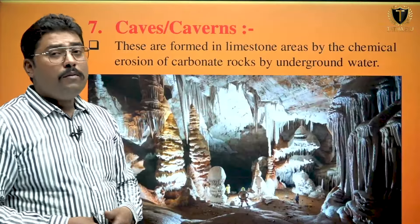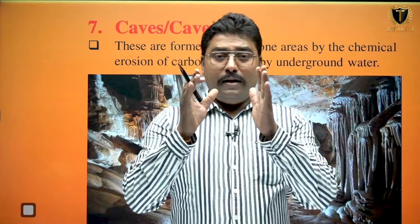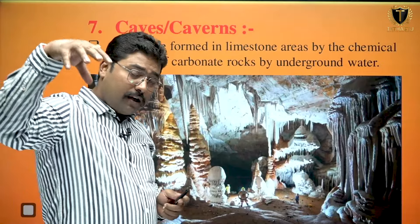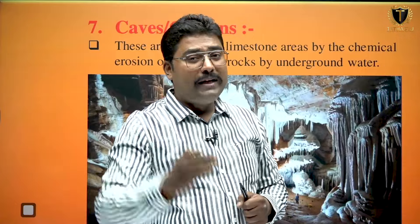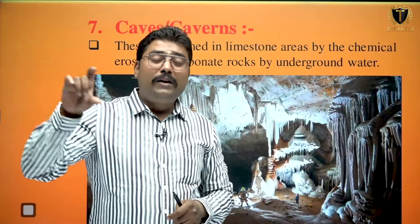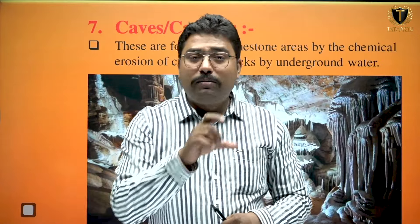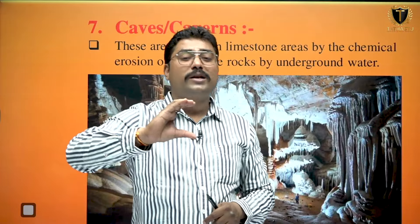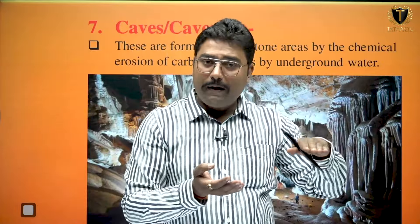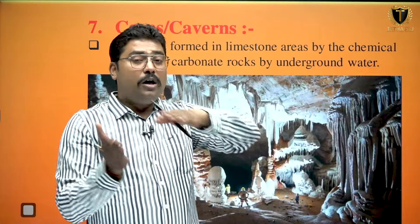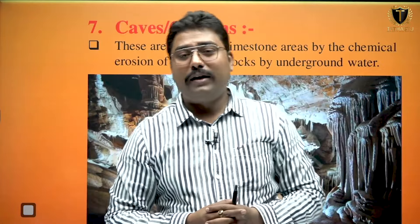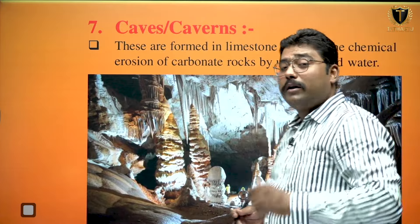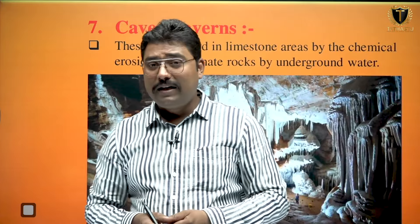After this, moving on to caves or caverns. In the blind valley, the river which was flowing over the surface has moved inside into the lower strata. What it will do is dissolve the CaCO3 — calcium carbonate — present underground in the lower strata, and form a subsurface drainage system. After formation of subsurface drainage, a cave will be formed, which is considered as a cave or cavern. These are formed in limestone areas by the chemical erosion of carbonate rocks by underground water.